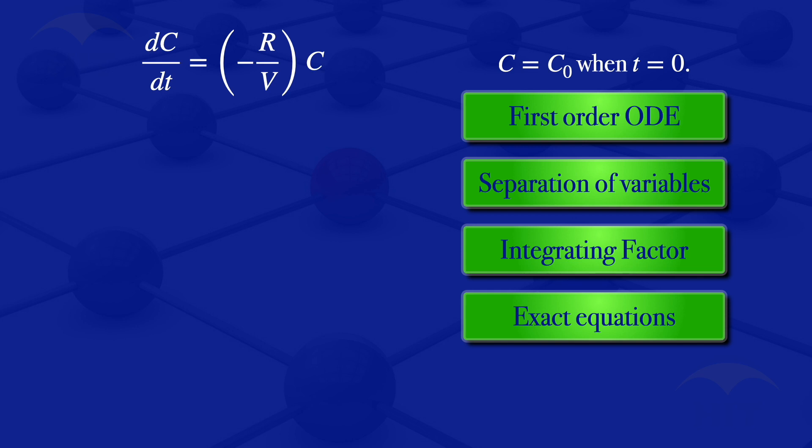When we have first-order differential equations, the methods of solution we have are: separation of variables, using an integrating factor, or solving exact equations. I usually prefer to start by checking if we can use separation of variables, because that is one of the easiest methods. In this case, we can see that we can separate variables, so I will use that method.